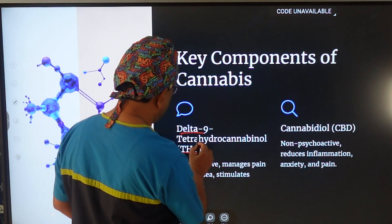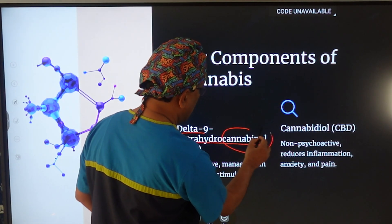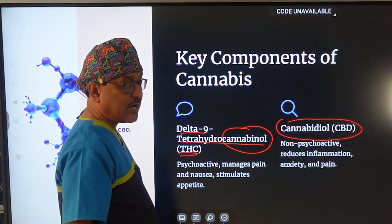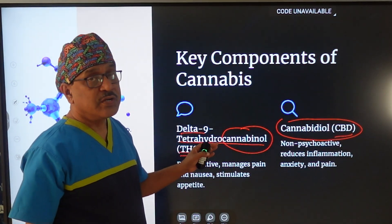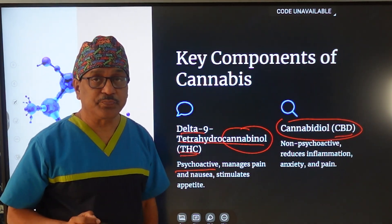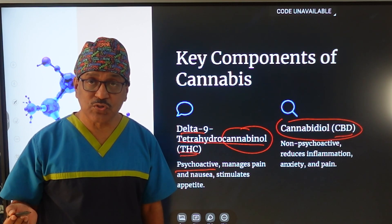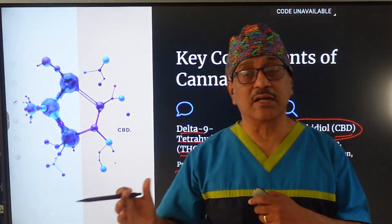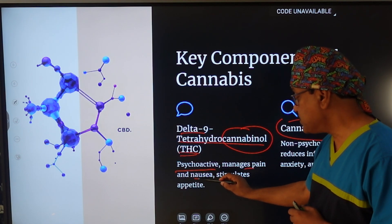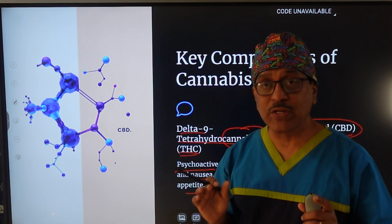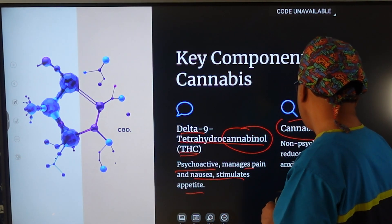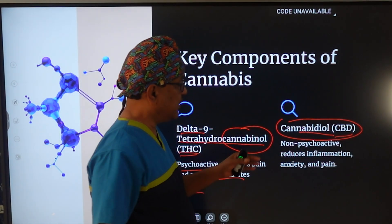There are two active ingredients. One is THC — delta-9-tetrahydrocannabinol — and the other is CBD (cannabidiol). THC acts mostly on the central nervous system, which is why it has addiction potential and is used as a psychoactive recreational drug. However, THC also has important therapeutic properties: it manages pain, improves nausea, and stimulates appetite, so we cannot ignore it in palliative care.